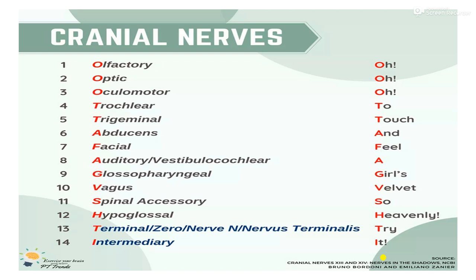Once again: there is Olfactory, Optic, Oculomotor, Trigeminal, Trochlear, Abducens, Facial, Auditory or Vestibulocochlear, Glossopharyngeal, Vagus, Spinal Accessory, and Hypoglossal nerve.